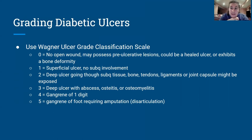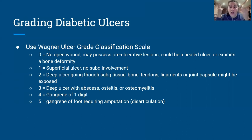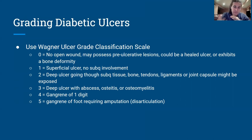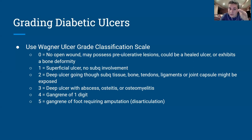We don't want to get to grade five, but this is how the boards would describe these stages. Zero is no wound. One is superficial. Two is going all the way down to exposed tendons and bones — equivalent to a grade four pressure ulcer. Three is osteitis, osteomyelitis, abscess. Four is one digit with gangrene. Five is the whole foot.